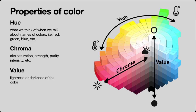Color theory is a big, messy field that encompasses a lot of philosophy and science. I want to give us a basic grounding and some vocabulary we can use both to articulate our own work and for working with clients or colleagues. The basic properties of color are hue, chroma, and value. Hue is what you're probably thinking about when you talk about color — those color names: red, yellow, blue. That's usually where most conversations about color stop.